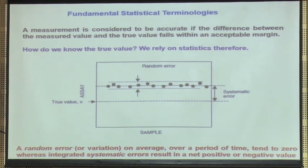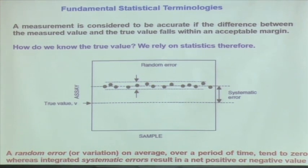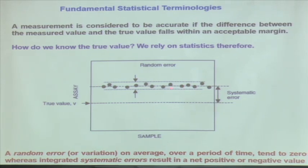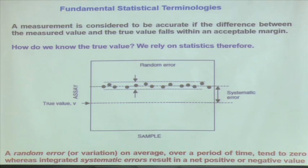My data may be precise but it may be inaccurate, because if I do not know my true value, it could be somewhere else while my measurements are always giving the value there. So this is called the random error — how much is the deviation — and this is the systematic error from the true value to your measured value.